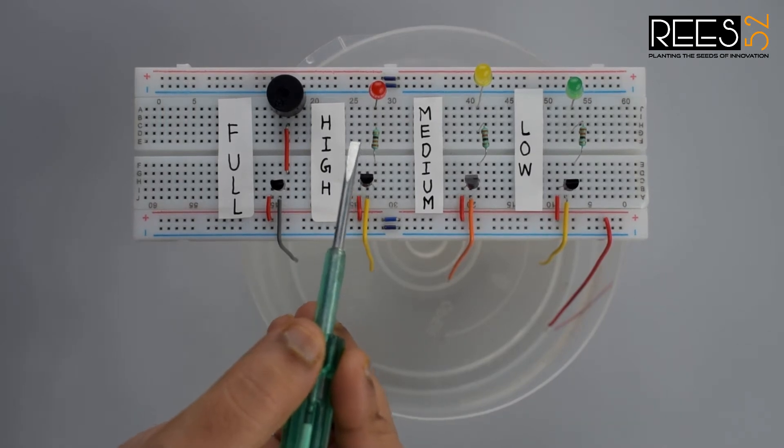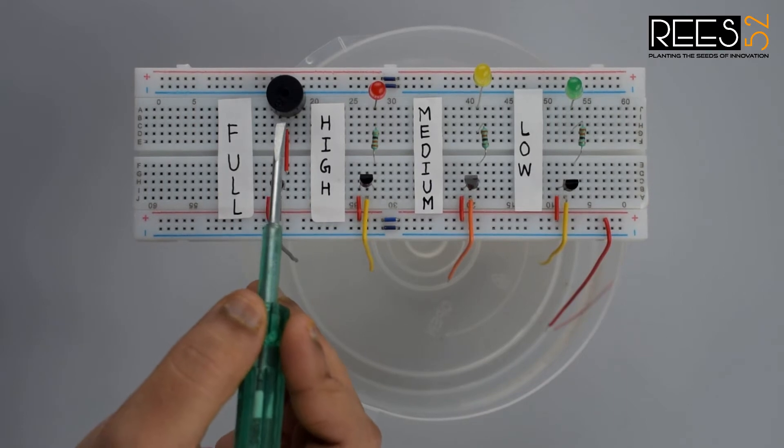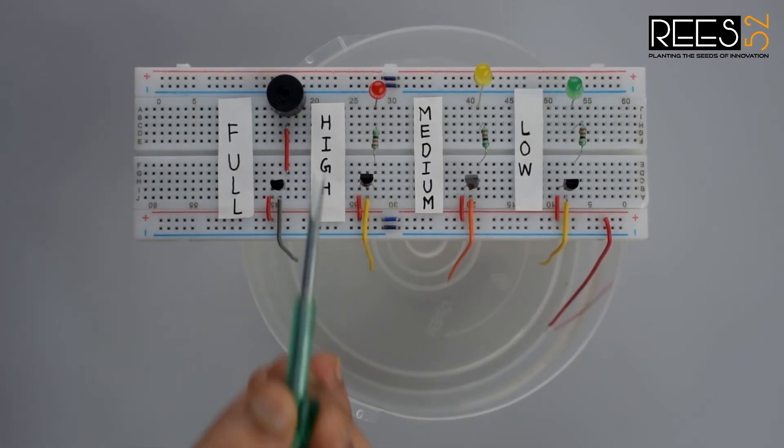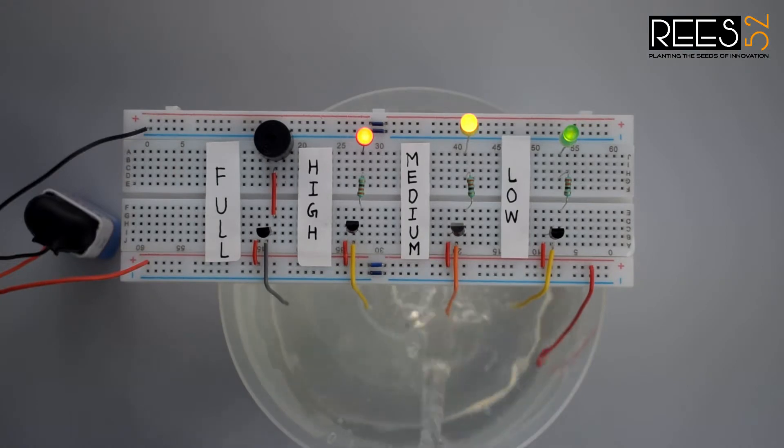to indicate the initial three levels A, B and C, and a buzzer to indicate full level that is D. When tanks get filled completely we get beep sound from the buzzer. So let's get started.